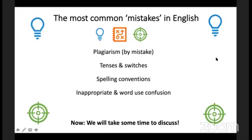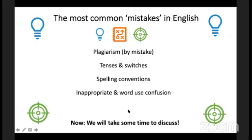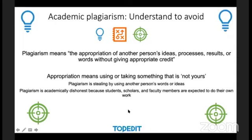Here are the most common mistakes we see in English academic writing: plagiarism by mistake, because nobody listening would consider copying text or figures from another published paper; tenses and switches; those pesky spelling conventions; and the inappropriate use of words and word use confusion. We're going to talk through these sections: plagiarism, tenses and switches, spelling conventions, and inappropriate word use.